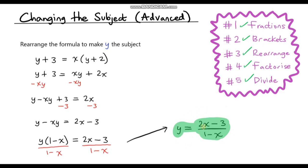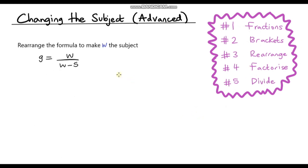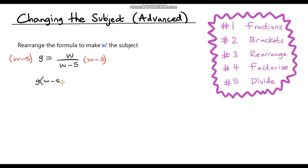Hopefully you got that — but if not, I've got a few more questions to have a go at. Question number two: rearrange the formula to make w the subject. As you can see we have a fraction with w in, so we need to get rid of that fraction. To do that we need to multiply by the denominator expression. If I multiply the right hand side by w minus 5 that will get rid of this fraction, and obviously I need to do the same to the left hand side.